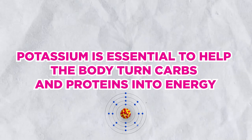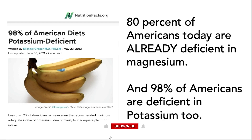This is really bad news for losing weight or achieving optimal health, because magnesium is needed to help the body burn fat, and potassium is essential to help the body turn carbs and proteins into energy. Eating healthy alone just doesn't cut it — you've got to have proper nutrients. I'm not saying don't eat fruits and vegetables; eat as many as you can. But in this day and age, we have to make supplementation a priority to get all the minerals and vitamins we need.